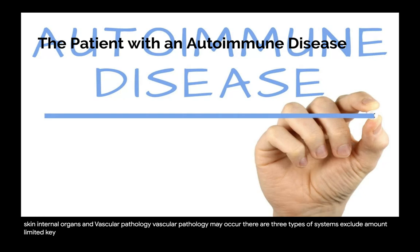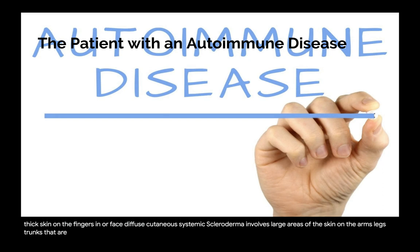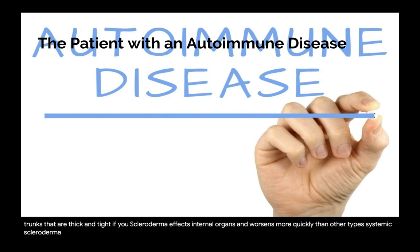Limited cutaneous systemic scleroderma, also known as CREST syndrome, is the milder form and usually involves thickened skin on the fingers and/or face. Diffuse cutaneous systemic scleroderma involves large areas of skin on the arms, legs, and trunk that are thick and tight, and affects internal organs, worsening more quickly. Systemic scleroderma without without skin involvement affects one or more internal organs but not the skin.